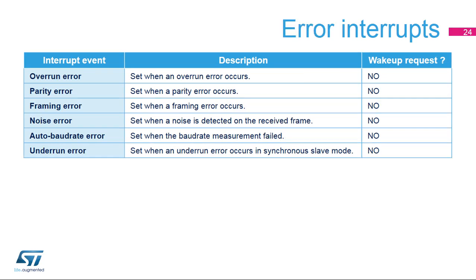Several error flags can be generated. The Overrun Error flag is set when an overrun error occurs. The Parity Error flag is set when a parity error occurs. The Framing Error flag is set when a framing error occurs. The Noise Error flag is set when noise is detected on the received frame. The Auto Baud Rate Error flag is set when the baud rate measurement failed. The Underrun Error flag is set when an underrun error occurs in synchronous slave mode.